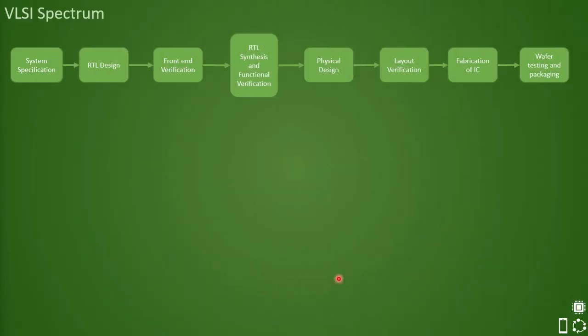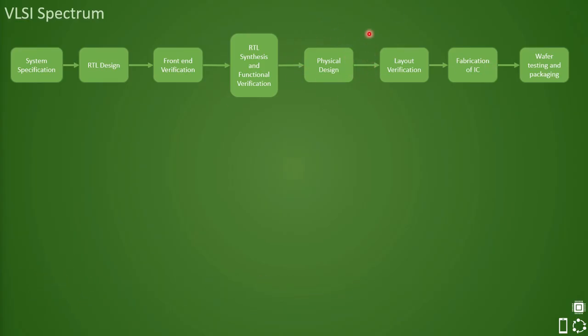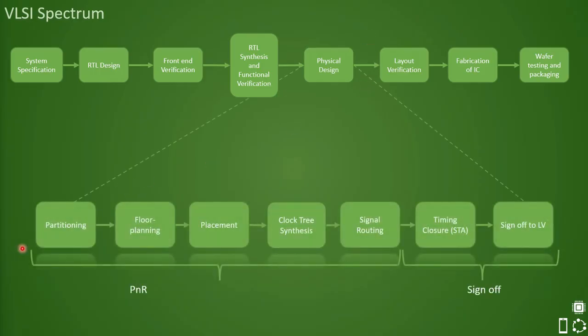In the previous lecture we briefly discussed the VLSI spectrum and what inputs are needed for physical design stage from partitioning onwards. Out of all the inputs that we discussed in the previous video, we shall be looking at netlist first.